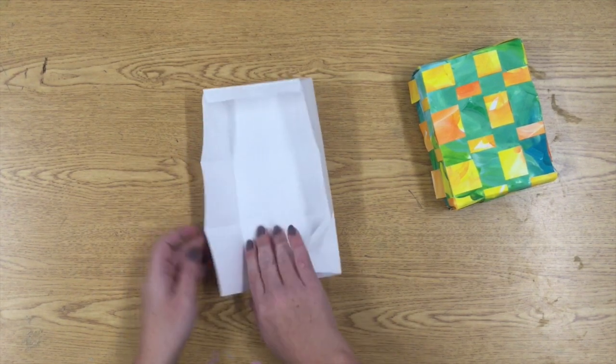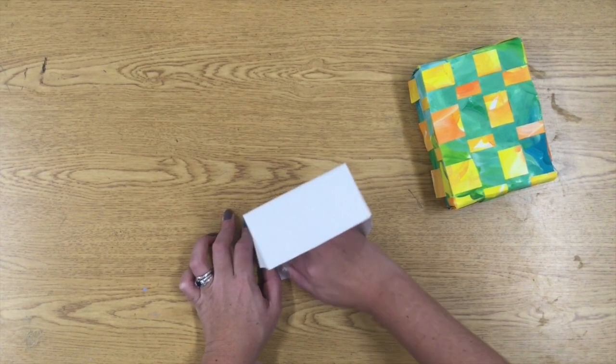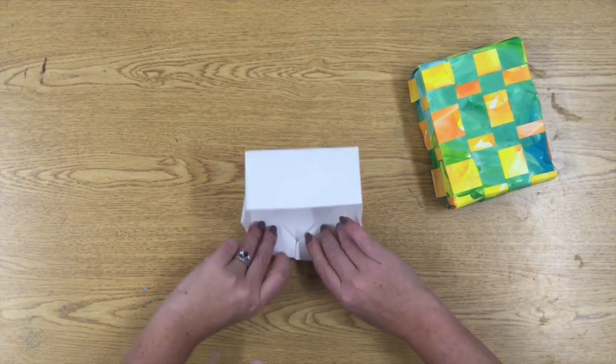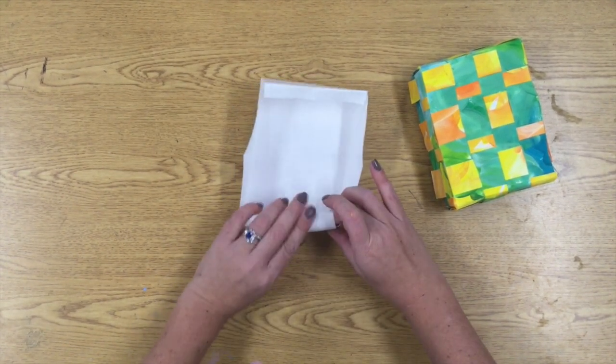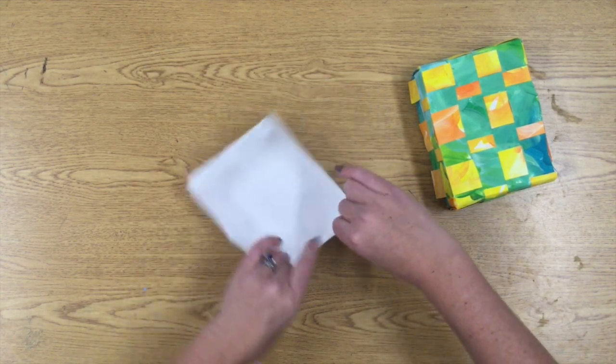So I'm going to try it again. On each corner I'm going to push in that triangle fold, get both sides folded down, fold that extra flap over, and now I have the bottom of my box.